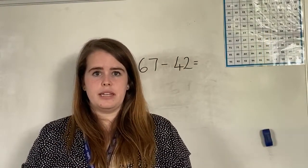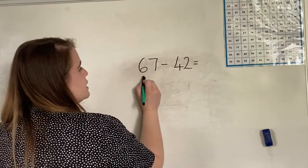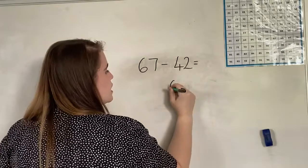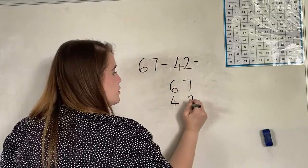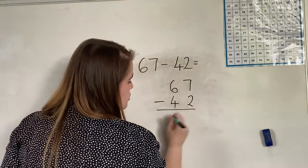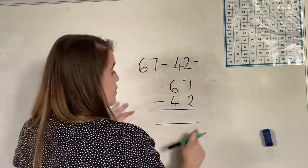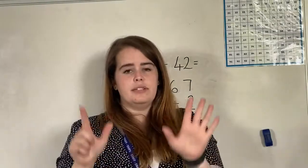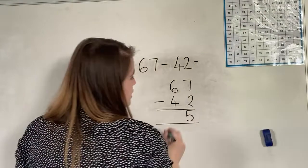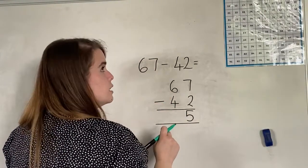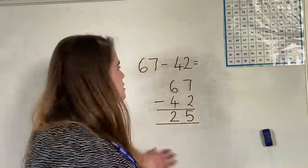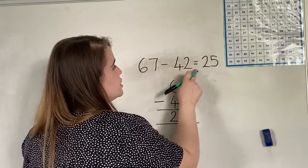Well done for showing great determination for your maths work today. We're going to quickly revise our skill one more time. 67 take away 42. We first have to line up our two-digit numbers so that each place value column is underneath each other — ones in the same column and tens in the same column. We put a subtraction sign to the left-hand side of our tens, and draw two lines underneath to represent our equals sign. Then we start with our ones: 7 take away 2. I have 5 fingers left, so we've got 5. Then 6 tens take away 4 tens — 6 take away 4 is 2, so 6 tens take away 4 tens is 2 tens. The answer is 25. 67 take away 42 equals 25.